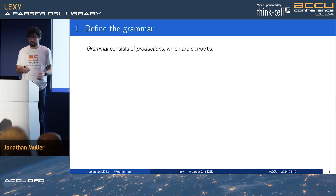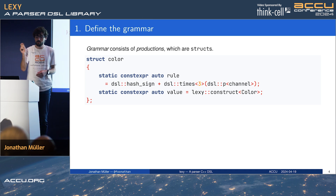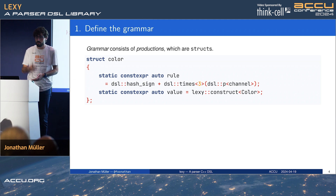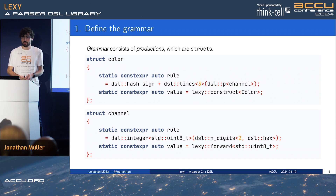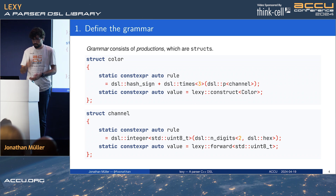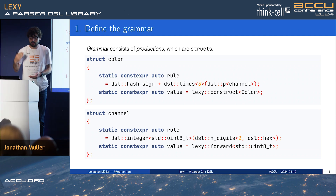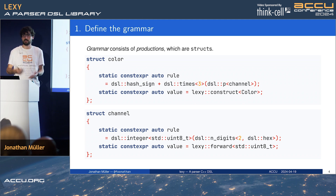First step: define the grammar. The grammar consists of productions, and in Lexi they are structs. Each struct defines a rule and a value. The rule defines using Lexi's DSL how to parse the thing. In this case we want to parse a hash sign and then three color channels. A channel itself is another production whose rule says we want to parse two hex digits and convert that into a uint8 integer. This produces a uint8, and the value is just a callback that forwards it as-is. When we parse our color, it parses the channels, each producing a uint8, and we use that to construct the color.